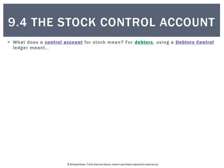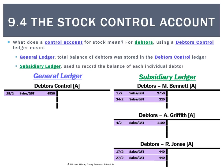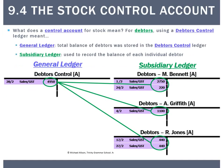What does a control account for stock mean? Let's look at what we did for debtors. For debtors, we had one ledger called the control account in the general ledger and then a few subsidiary ledgers. The balance of 4,950 in the debtors control account is made up of each of those individual transactions in the subsidiary ledgers.